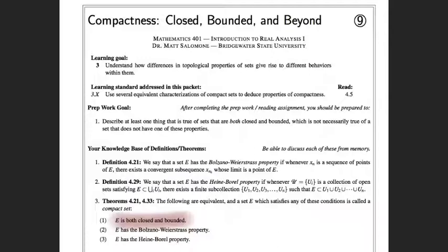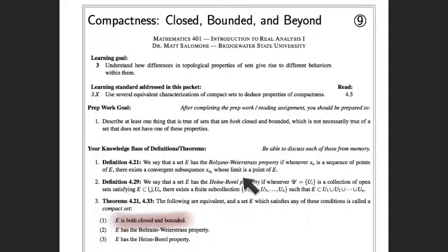So the purpose of this is to get a feel for why that happens. The two properties — and they both take a little bit of mental gymnastics to wrap your head around, which is the point of today's activity — are called the Bolzano-Weierstrass property and the Heine-Borel property. We have four mathematicians with difficult-to-pronounce names lending their names to these properties.